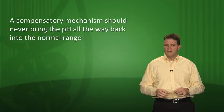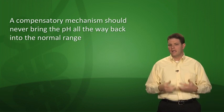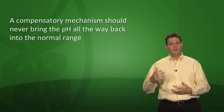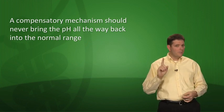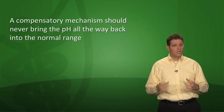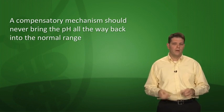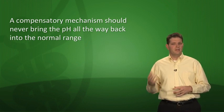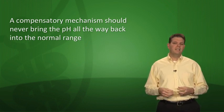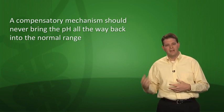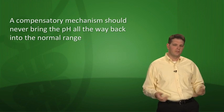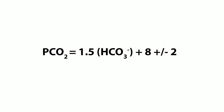Here's the key rule: a compensatory mechanism should never bring the pH all the way back into the normal range. If pH is normal but both PCO2 and bicarb are out of whack, that's not good compensation — it's a mixed disorder, such as a combined primary metabolic acidosis and primary respiratory alkalosis. Clinically, Winter's formula estimates expected PCO2 in metabolic acidosis; if actual PCO2 is way off, there's a mixed disorder.